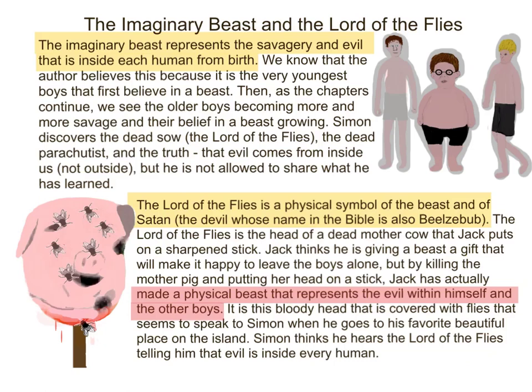Simon discovers the dead sow — the Lord of the Flies — and the truth that evil comes from inside us, not outside, but he is not allowed to share what he has learned. The Lord of the Flies is a physical symbol of the beast and of Satan — whose name in the Bible is also Beelzebub. It is the head of a dead sow that Jack puts on a sharpened stick, thinking he is giving the beast a gift. By killing the sow and putting her head on a stick, Jack has actually made a physical beast representing the evil within himself and the other boys. This bloody head covered with flies seems to speak to Simon, telling him that evil is inside every human.